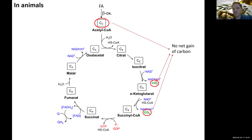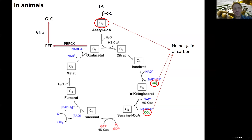This is an obvious problem: if you want to biosynthesize sugars, you need to get carbon from somewhere. If we have no net carbon gain in the cycle, we need to get carbon from somewhere. If we wanted to make glucose, at least theoretically, we could help ourselves with gluconeogenesis (GNG).